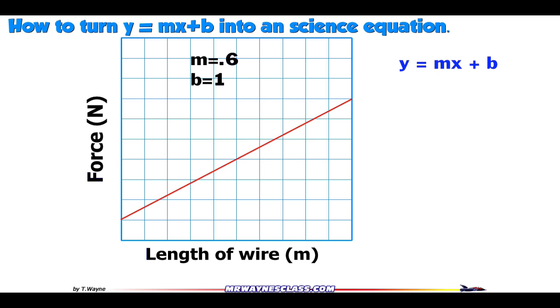The next step in math class is you replace the m and the b with the numbers 0.6 and 1. So now it becomes y equals 0.6x plus 1.